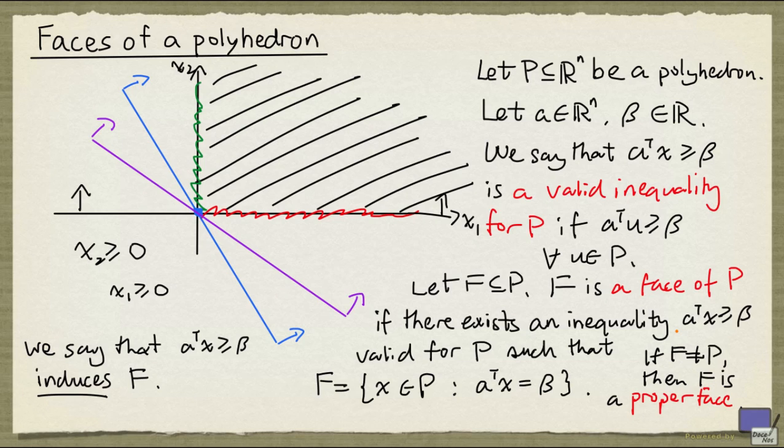The fact that the definition allows for infinitely many inequalities is somewhat unsettling. But there is a result that we are going to state next, which will allow us to enumerate all the faces of a polyhedron.